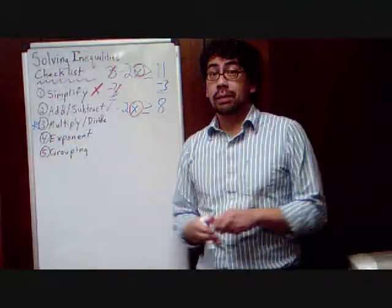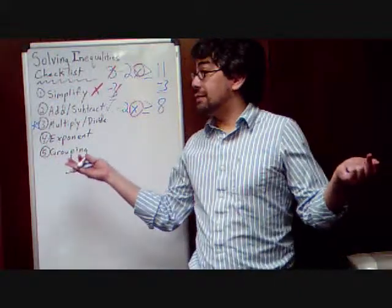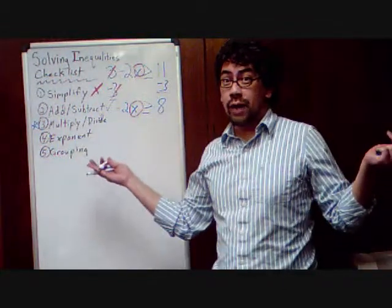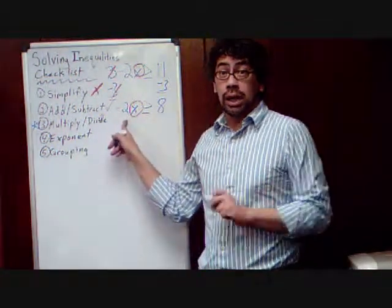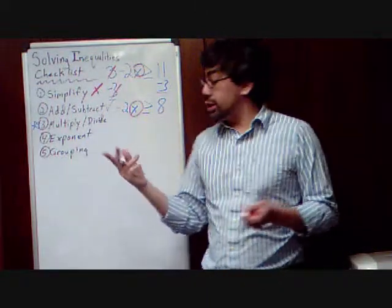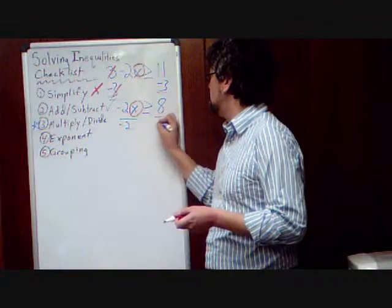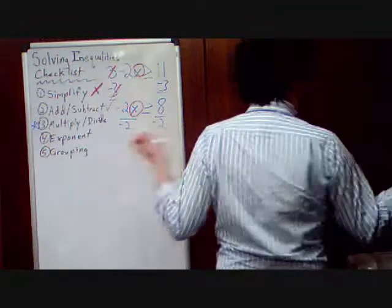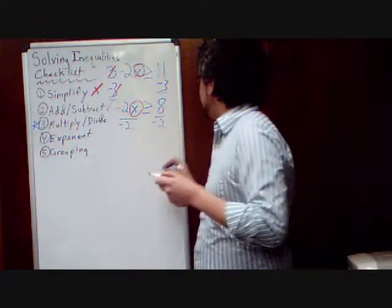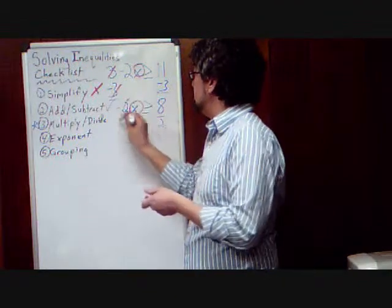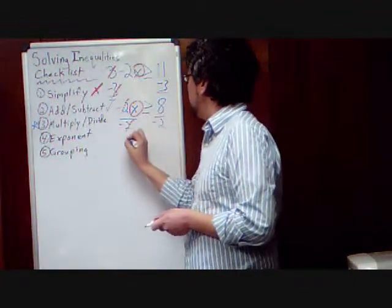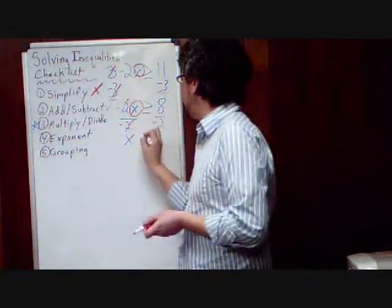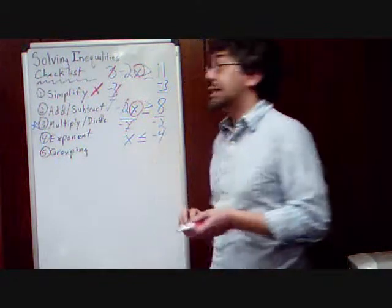Whenever we multiply or divide by a negative number, that inequality symbol, we have to take it and turn it around. We are multiplying by a negative 2 here. So, opposite of that, we're going to divide by a negative 2. But, that is a negative, so we're going to take the inequality symbol and turn it around. So, we come below this, cancelling out our negative 2s, and we have x, all by itself now, turning that inequality symbol around, leaving negative 4.